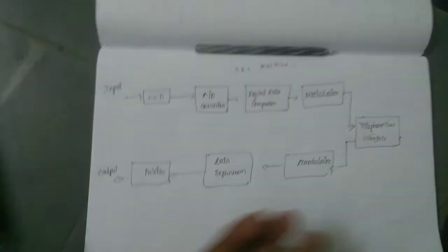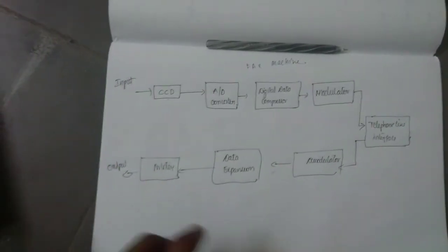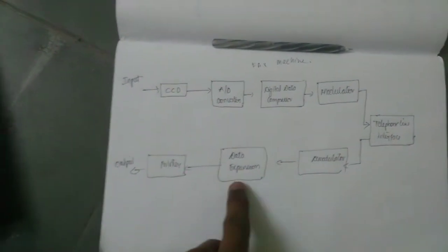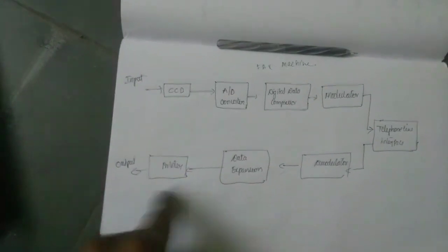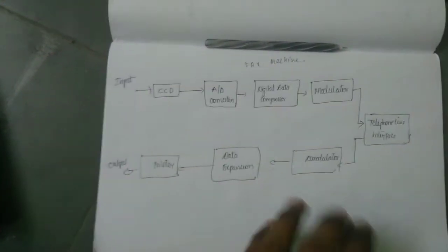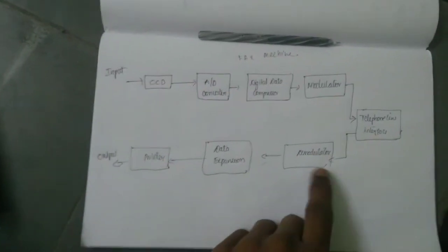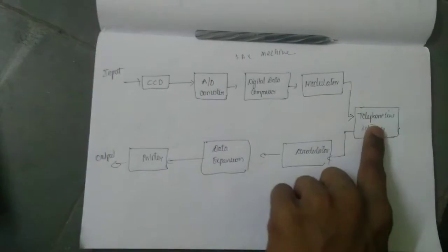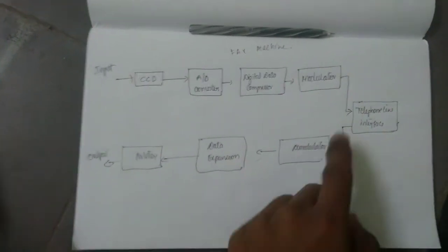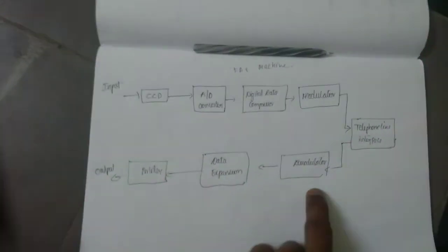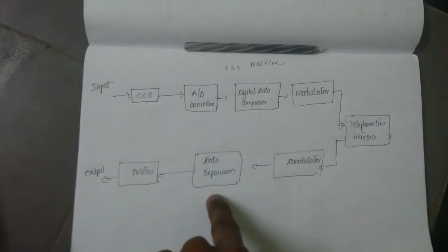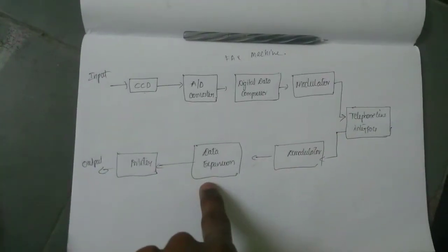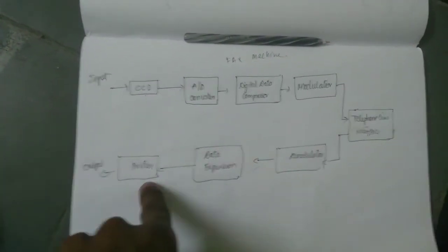We expand the data — whatever compressed information was received, we do data expansion. Then we do a direct printer printout. So friends, this is the working of the fax machine — demodulate, data expansion, and print.